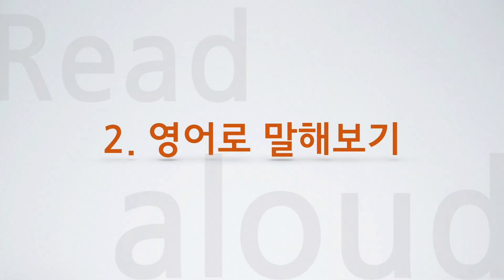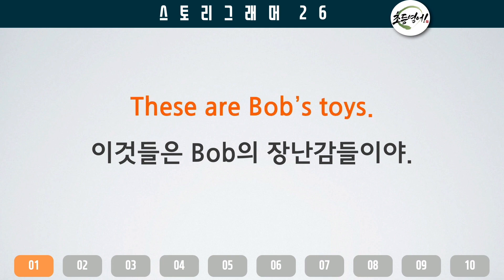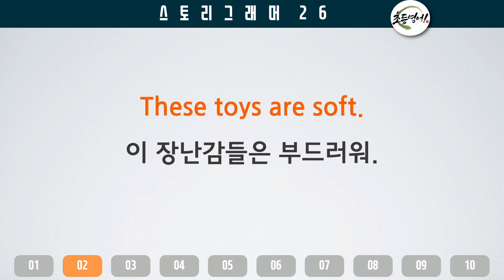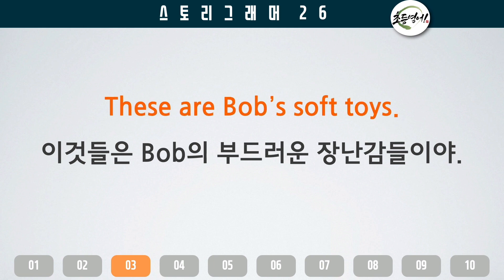영어로 말해보기. 이것들은 Bob의 장난감들이야. These are Bob's toys. These toys are soft. These are Bob's soft toys.